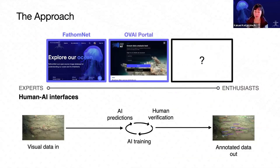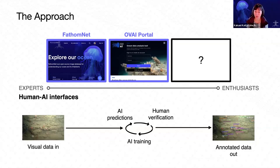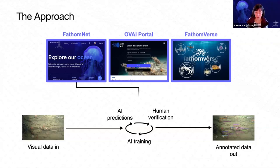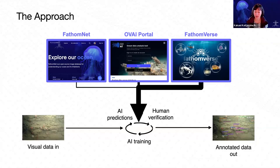The next thing we've been funded to create is the portal, which provides access to machine learning pipelines so that groups or institutions interested in participating don't need a computer science degree to use these features. Last but not least is FathomVerse — a game where we're inviting non-experts into the process of helping annotate and analyze ocean-collected visual data, which I'll talk about a bit later. The whole goal through each of these platforms is to generate human verification that contributes to these workflows to help produce annotated data.